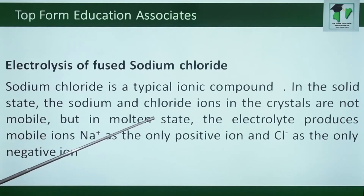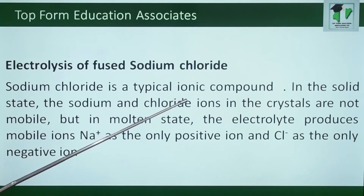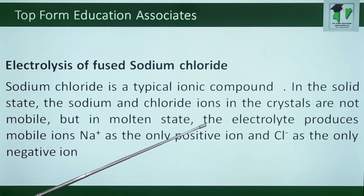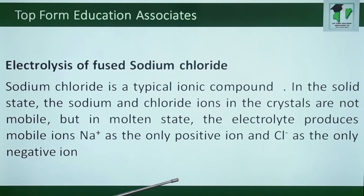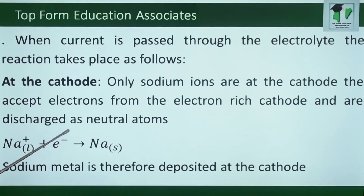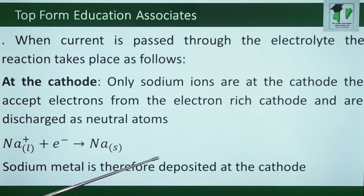Electrolysis of fused sodium chloride. Sodium chloride is a typical ionic compound. In the solid state, the sodium and chloride ions in the crystals are not mobile. But in the molten state, the electrolyte produces mobile ions: sodium ion as the only positive ion, and chloride ion as the only negative ion. When current is passed through the electrolyte, at the cathode, only sodium ions are present; they accept electrons from the electron-rich cathode and are discharged as neutral atoms. Sodium metal is therefore deposited at the cathode.